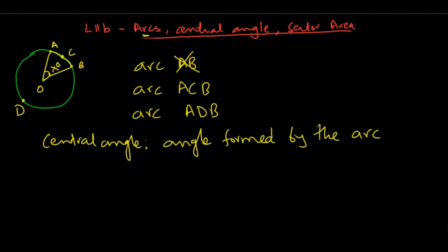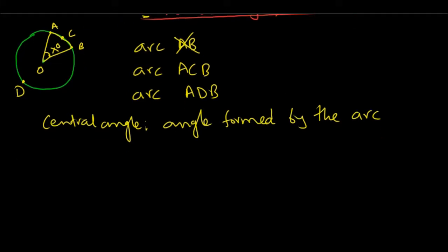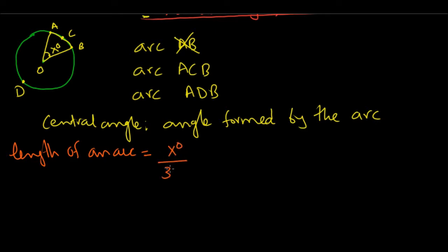This central angle is important in a few calculations. Let's first see how we can find the length of an arc. The formula is: take your central angle x degrees divided by 360 — since 360 is the full revolution around the circle — giving you the fraction of the circle covered by the arc. Then multiply this fraction by the circumference, 2πr, and you get the length of the arc.